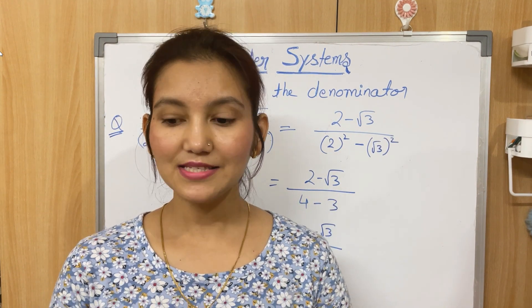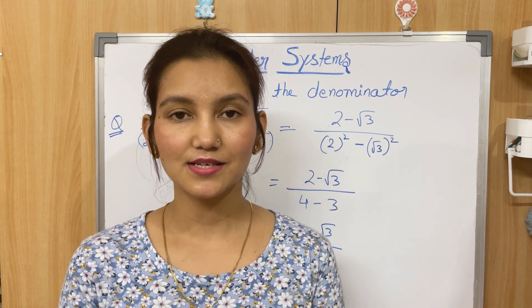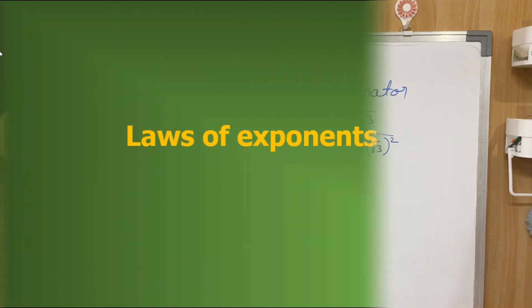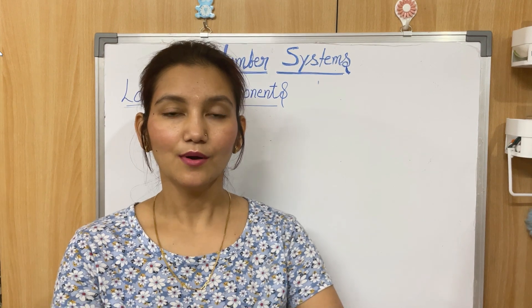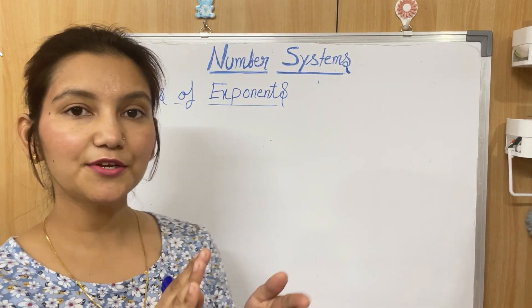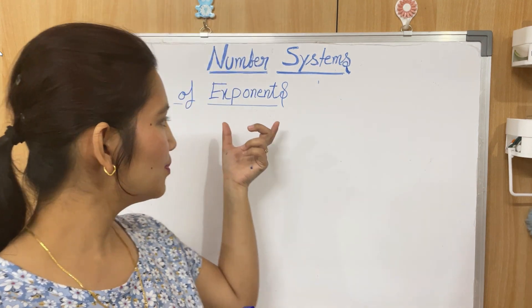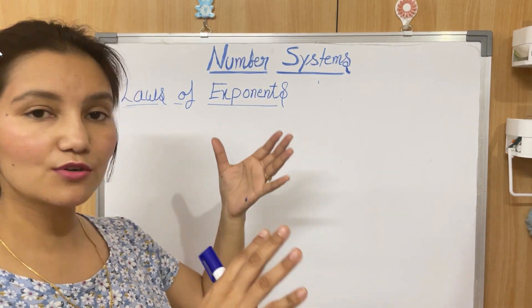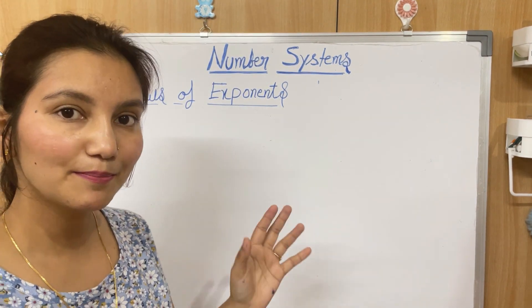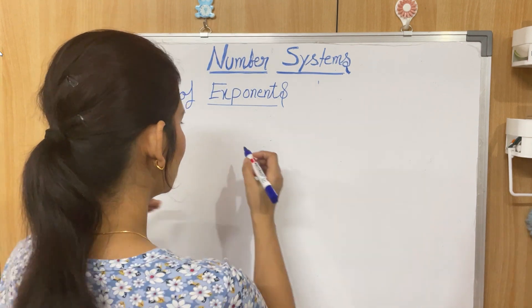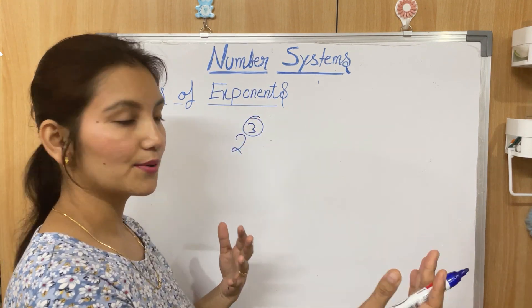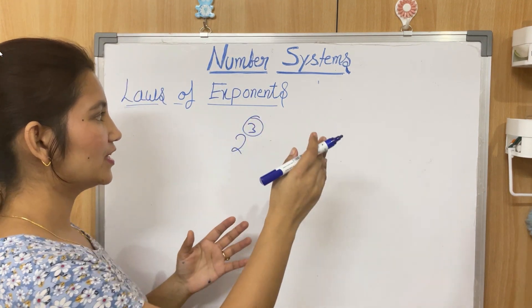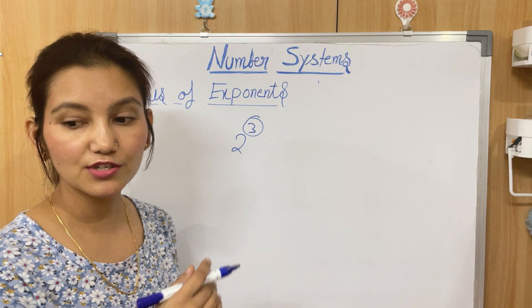Now let's move on to discuss laws of exponents. Before we do that, we need to know what exponents mean. It's a fancy name, but it just means the power of something. For example, if I write 2³, then 3 is the exponent — 3 is the power. So laws of exponents is what we are going to discuss now.